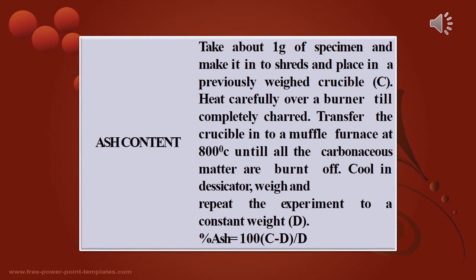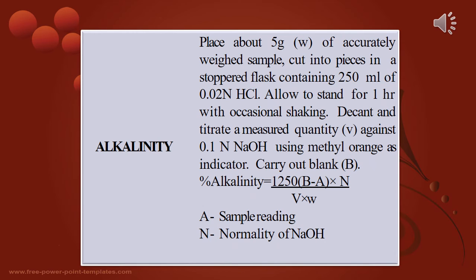For the ash content test, take about 1 gram of specimen, shred it, and place in a previously weighed crucible. Heat carefully over a burner until completely charred, then transfer to a muffle furnace at 800 degrees Celsius until all carbonaceous matter is burnt off. Cool in a desiccator, weigh, and repeat to constant weight (D). Percentage ash is calculated as (C − D) / D, where C is the weight of the crucible.